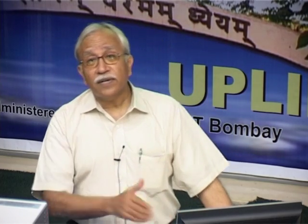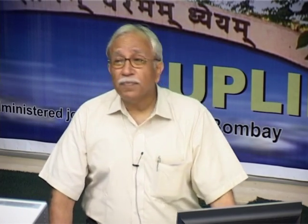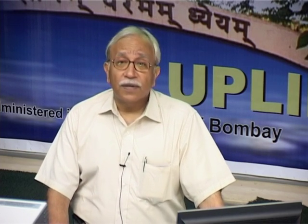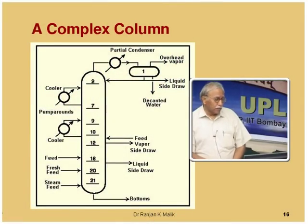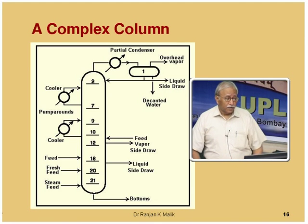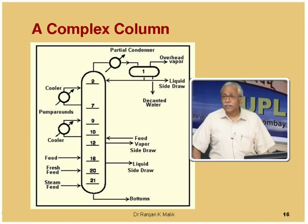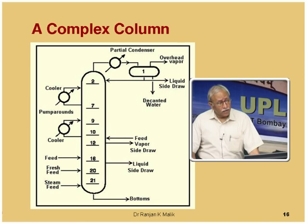What I constructed was a simple column — a conventional column with one feed, one top product, one bottom product, a condenser on top, and a reboiler at the bottom. This simple example of a complex column is not too complex in itself, but compared to the cascade we constructed, it is complex.